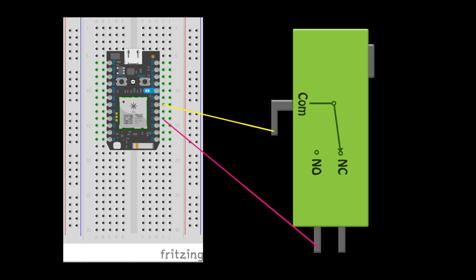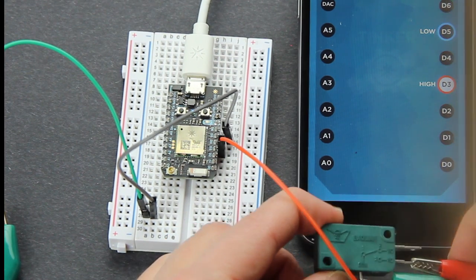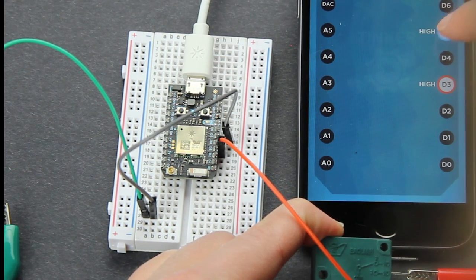Now, if we hook it up to the normally open part of the switch, you can see that it reads low when the button is not pressed, and it reads high when the button is pressed.